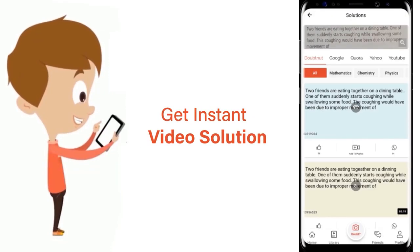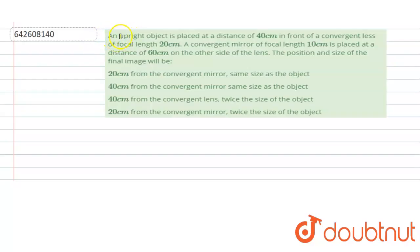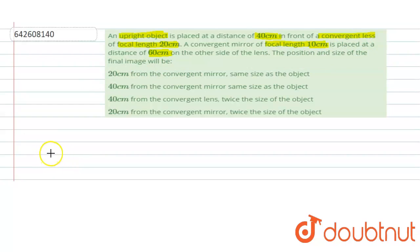The problem states that an upright object is placed at a distance of 40 centimeters in front of a convergent lens, that means a convex lens, of focal length 20 centimeters. A convergent mirror, that means a concave mirror, of focal length 10 centimeters is placed at a distance of 60 centimeters on the other side of the lens. We have to find the position and the size of the final image.